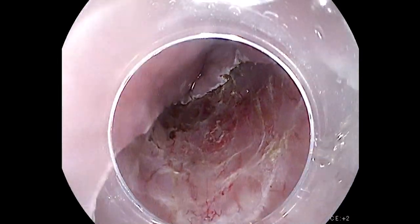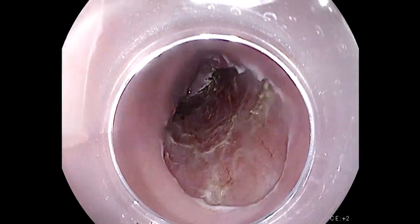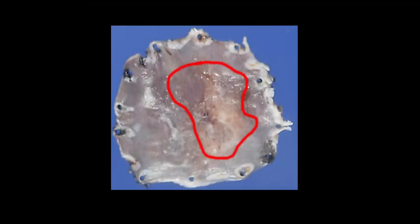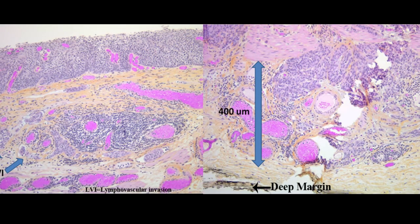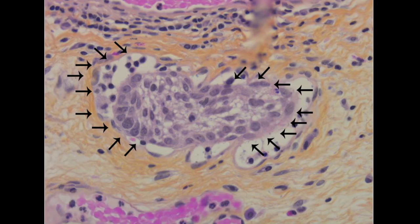Here we can see the final defect post-ESD. Here is the gross specimen, with the depressed area containing the B2 vessels and reticular pattern outlined in red. Here we can see the corresponding pathology demonstrating SM2 moderate to poorly differentiated squamous cell carcinoma. Under high power, we can also see lymphovascular invasion.